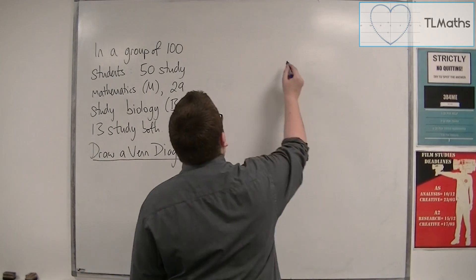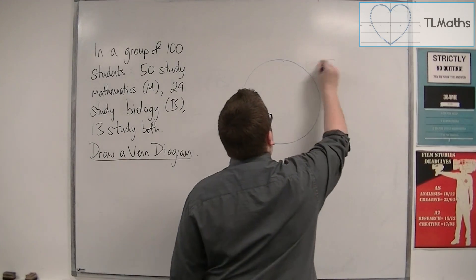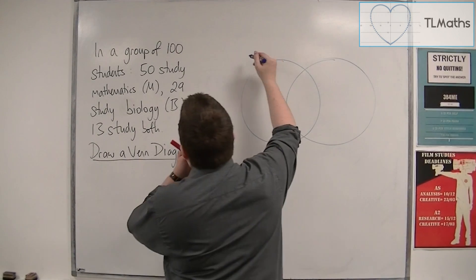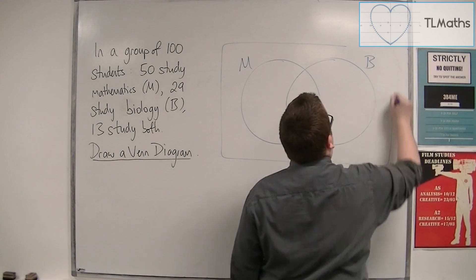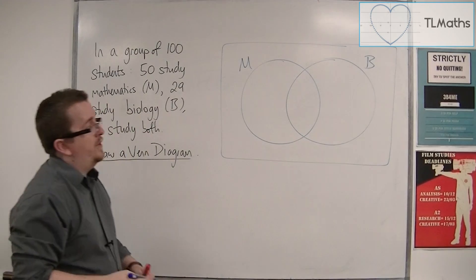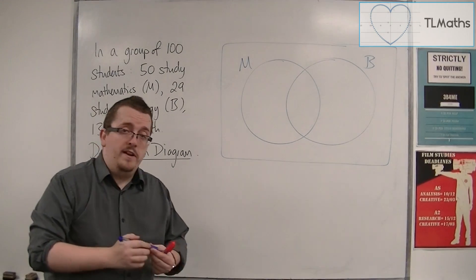So the first thing that we're going to do is draw out two circles. And we've got maths and biology. And we're going to draw a box around the outside because potentially some people might not study either.